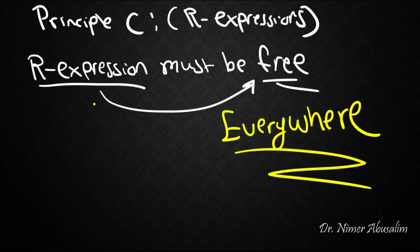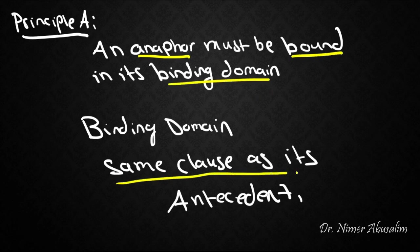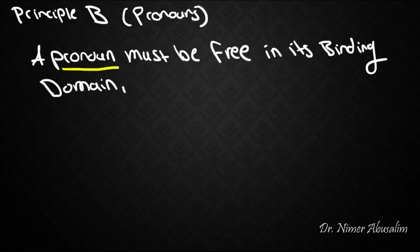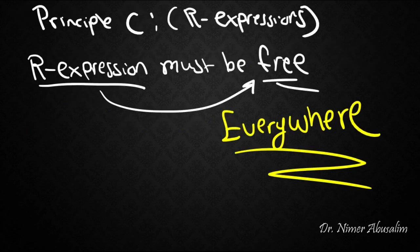To sum up: Principle A states that an anaphor must be bound in its binding domain, which is the same clause as its antecedent. Principle B states that pronouns must be free in their binding domain — the same clause as the antecedent. An R-expression must be free everywhere — in the same clause or in another clause, it must always remain free.